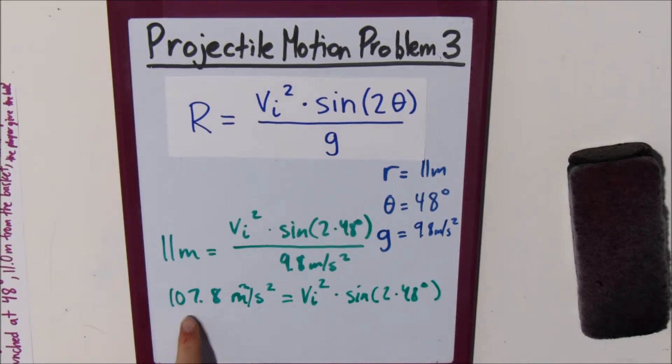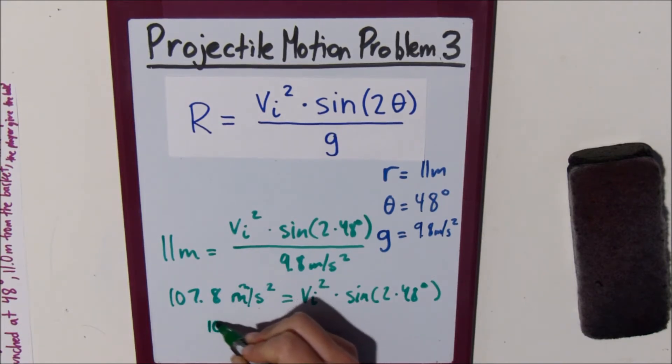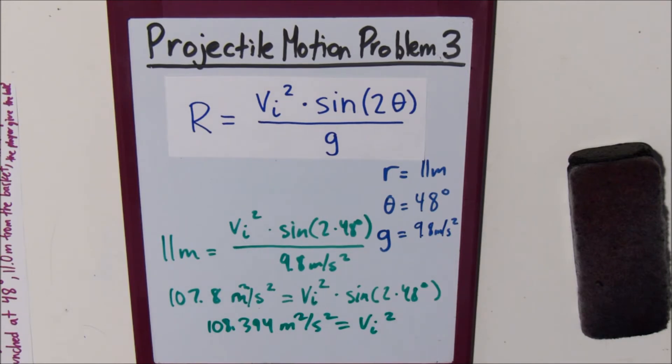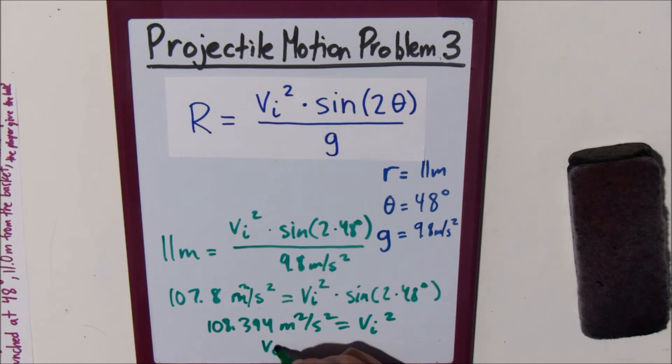And then, we would divide this number by sine of 2 times 48. We end up getting 108.394 meters squared divided by second squared equals velocity initial squared. Then, we take the square root of that, and we get velocity initial equals 10.411 meters per second.